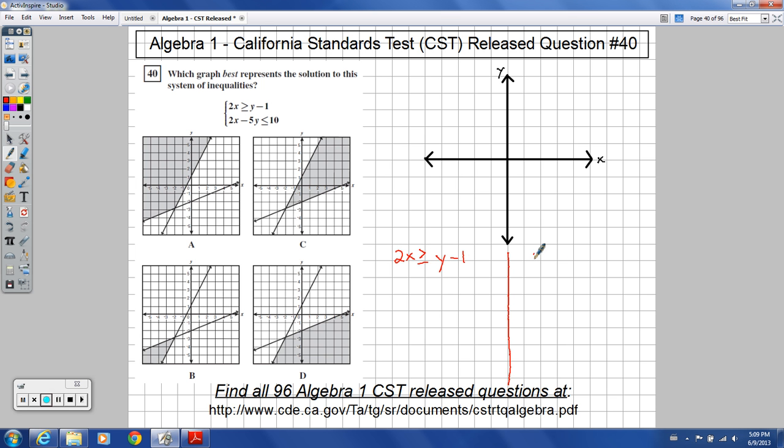On this side, I'm going to do this one in green. I'm going to do 2x minus 5y less than or equal to 10.